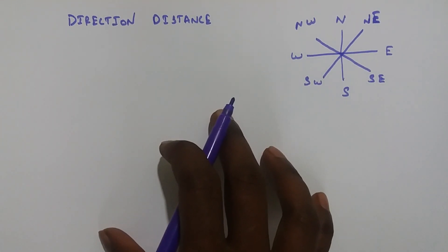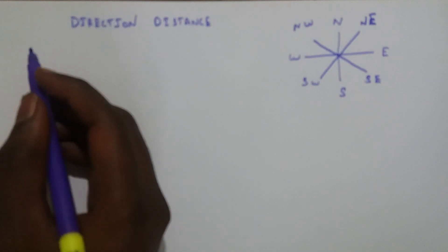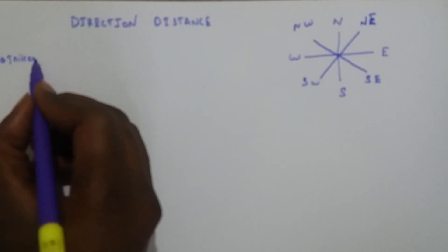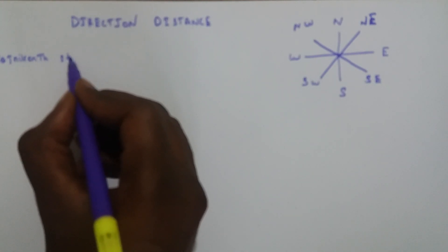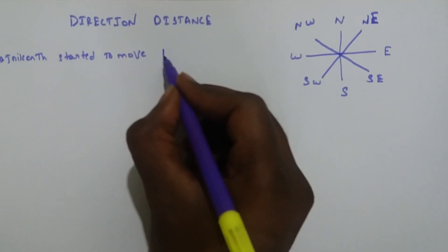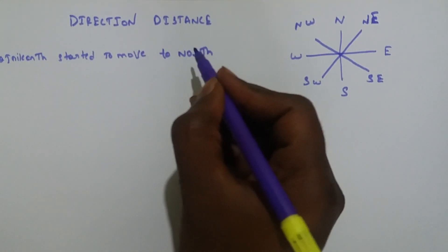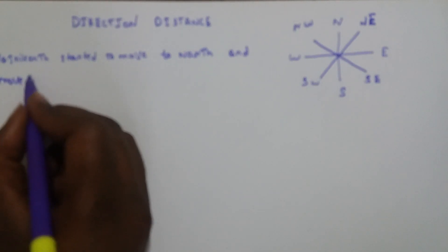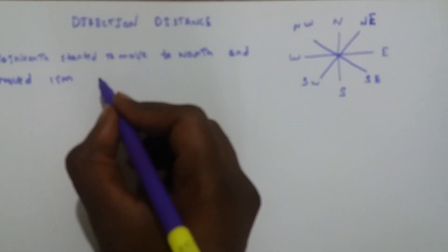Now we are going to see the first basic problem. Rajnikanth started to move towards North and moved 15 meters.